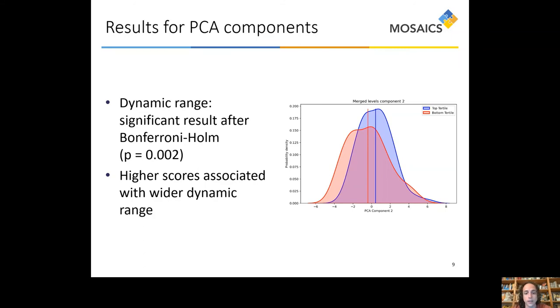When checking for PCA components, the second one, the one that was called dynamic range, was significantly different even after Bonferroni-Holm correction. You can see on the right the results of the Mann-Whitney-Wilcoxon test and the kernel density estimation for the second component. In blue, again, the top scoring population. In red, the bottom scoring population. And as you can see, the central values, the means and the medians as well are quite significantly different. Although there is a wide overlap and therefore this component is not a reliable predictor of performance, there is still quite a large and significant difference in averages. Specifically, higher scores are associated with a wider dynamic range.